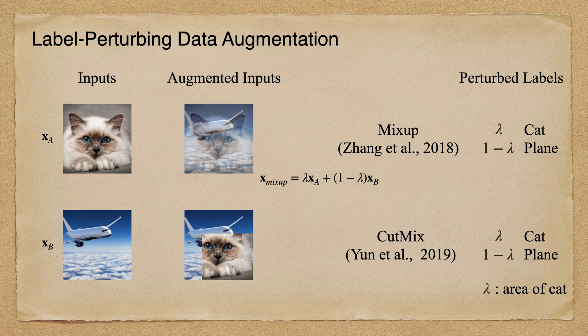In the illustration, we show an example of perturbing the input pixels and labels by mix-up and cut-mix. However, these perturbations are usually operated at the pixel level, which might not be flexible enough to be used in hidden layers of neural networks for various applications and architectures.